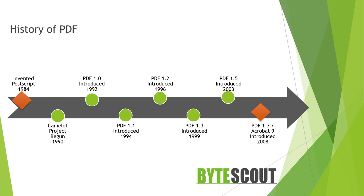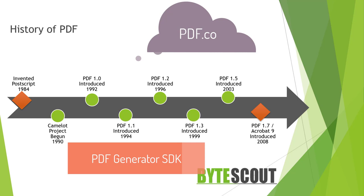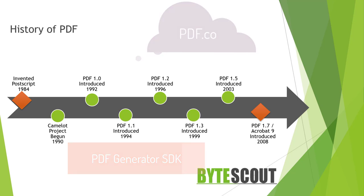ByteScout offers a variety of options for working with PDF files. For example, when copying text it can sometimes be copied in the wrong order, or it can't be copied at all, or the copied text is damaged and appears as garbage when pasted. All these issues are solvable with tools such as PDF.co Cloud API and on-premise tools like PDF Generator SDK, which perform deep analysis of PDF files. Some use cases for these tools will be covered later in this course, and the next episode will study PDF internals and PDF specification in brief.